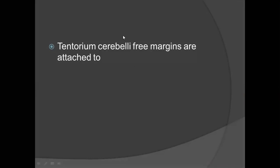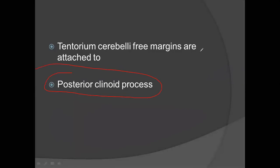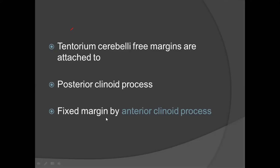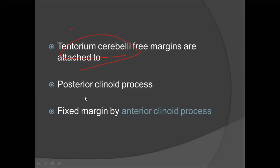The tentorium cerebelli free margin is attached to the posterior clinoid process — this is very important, as many people get confused here. The fixed margin of the tentorium cerebelli is attached to the anterior clinoid process. Other possibilities include questions about where the tentorium cerebelli starts and ends, and its free and fixed margin attachments — you should know all of these.